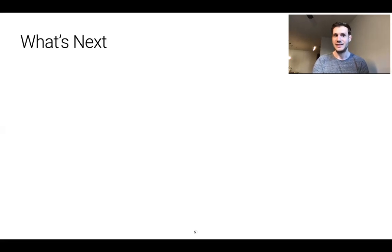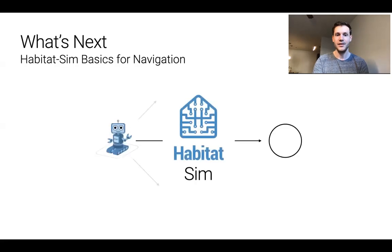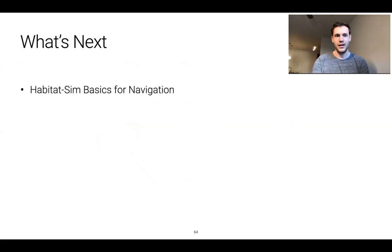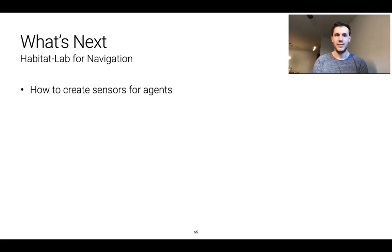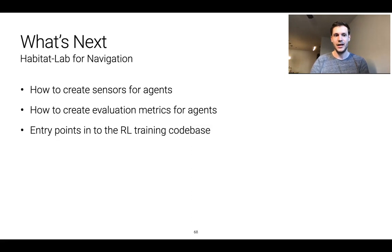Finally I want to talk about what's next in this tutorial and how it connects with training an agent for navigation tasks. We have a tutorial on Habitat sim basics for navigation and in that we'll talk about what core components of Habitat sim are used in this process. Then also we have a tutorial on Habitat lab for navigation and in that we'll talk about how to create sensors for agents, how to create evaluation metrics for those agents, and we'll look at the entry points into the RL training code base.